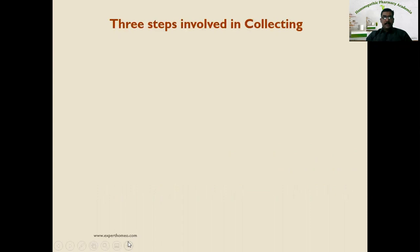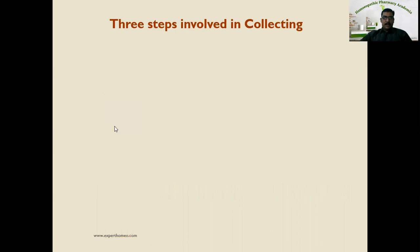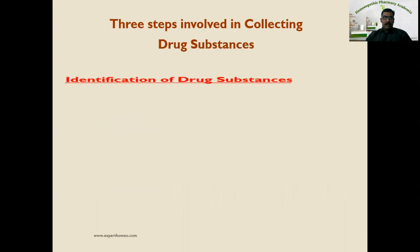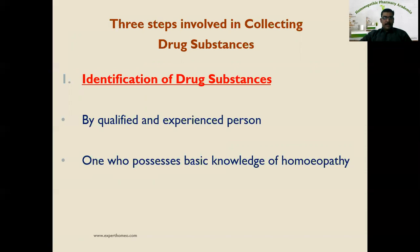The three steps involved are: first, identification of drug substances. The identification should be done by a qualified and experienced person — one who possesses basic knowledge of homeopathy. The expert can be a botanist, a taxonomist, a zoologist, or a chemist, who can identify the proper drug substance from various sources.